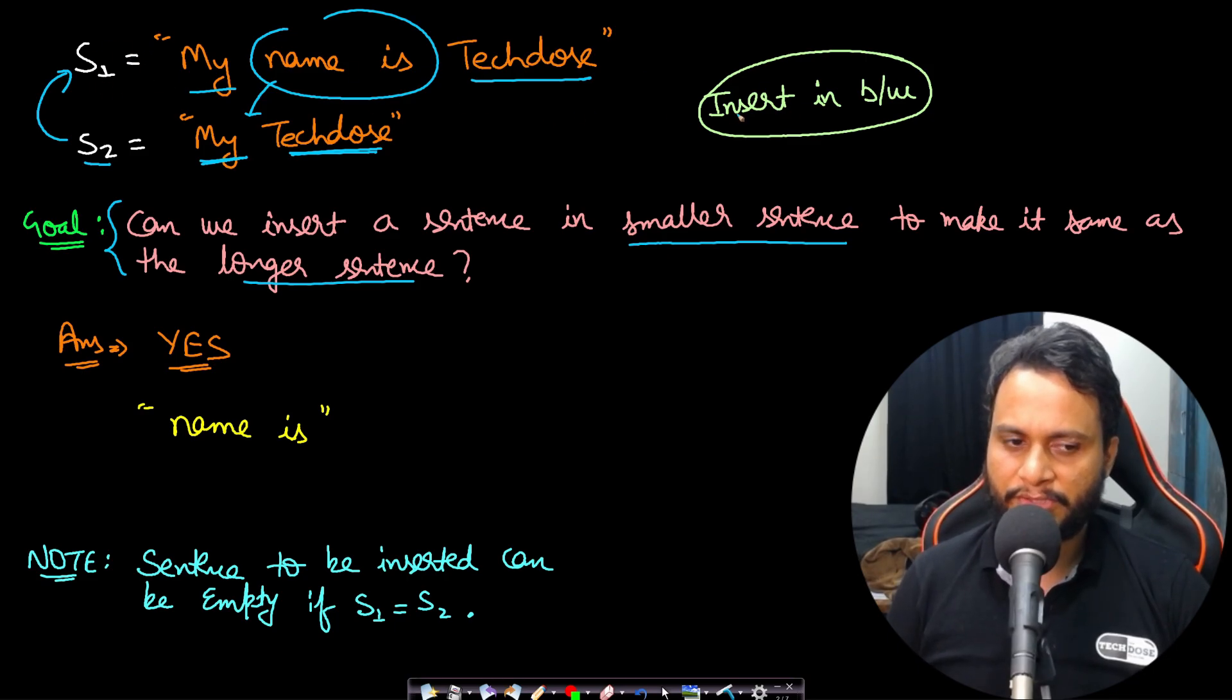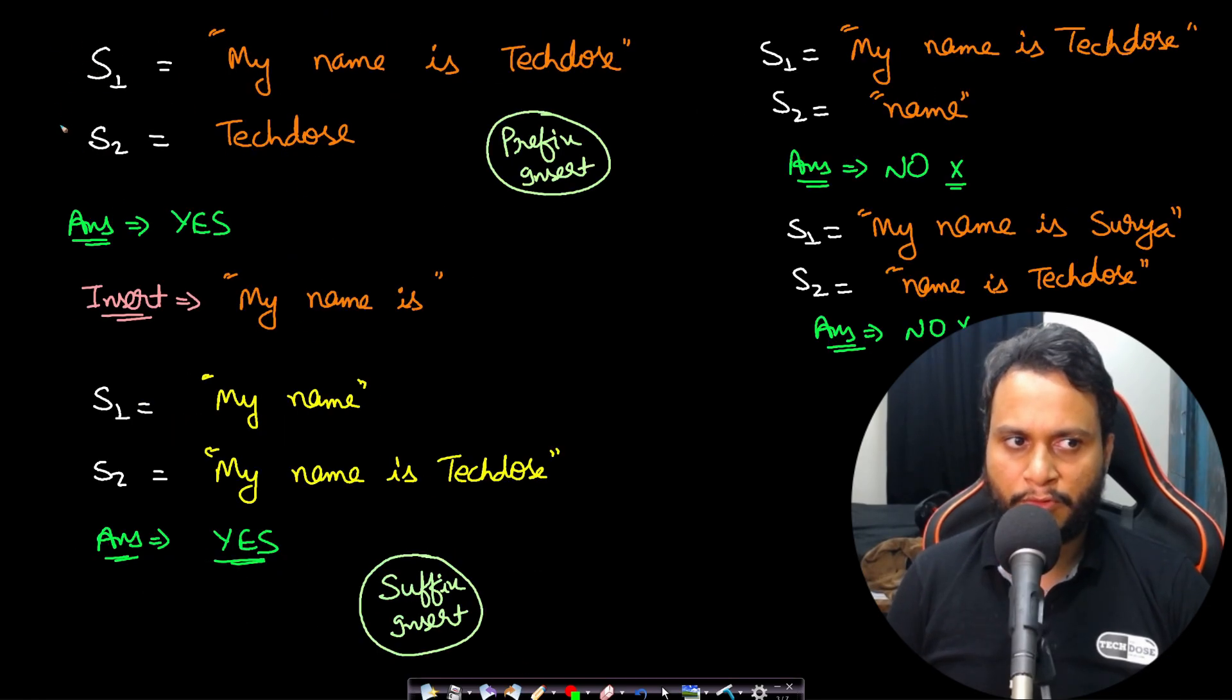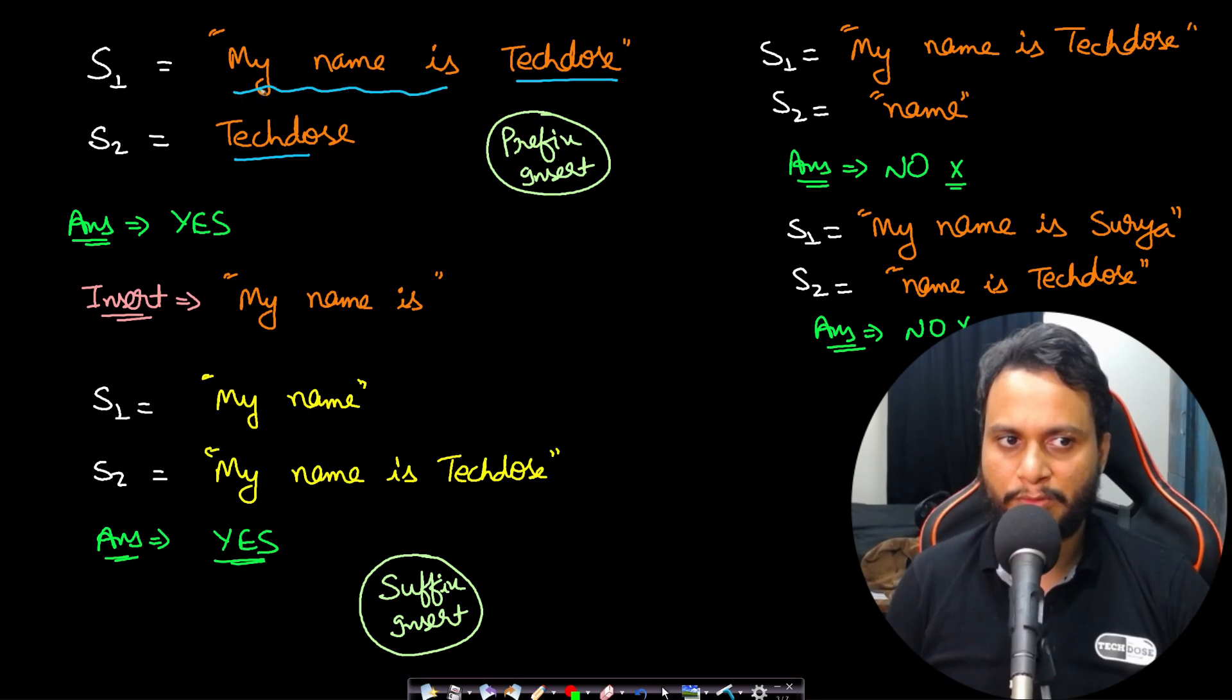This is the case of insertion in between. If both strings S1 and S2 are exactly the same, we need not insert anything and just return true. Now let's look at more examples. Let's say string S1 is 'my name is TakeDose' and string S2 is 'TakeDose'. In this case, 'TakeDose' is already present in the suffix and 'my name is' needs to be inserted in the beginning of S2 so that S2 becomes S1. So it is possible to convert the smaller sentence to the larger sentence by inserting 'my name is' in the beginning of S2.